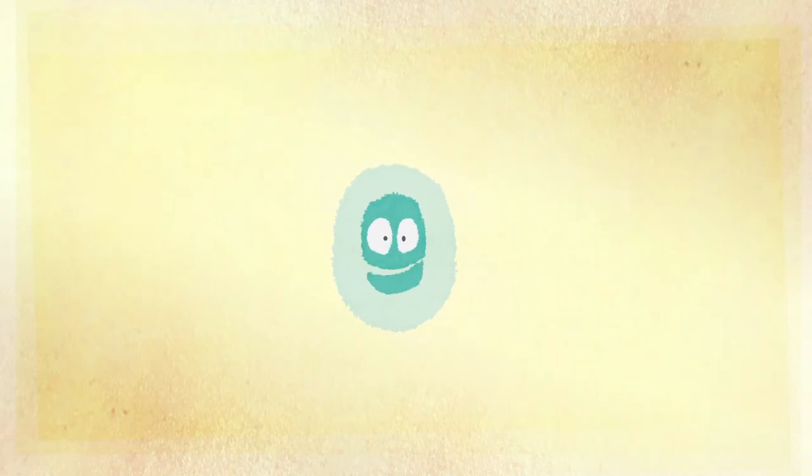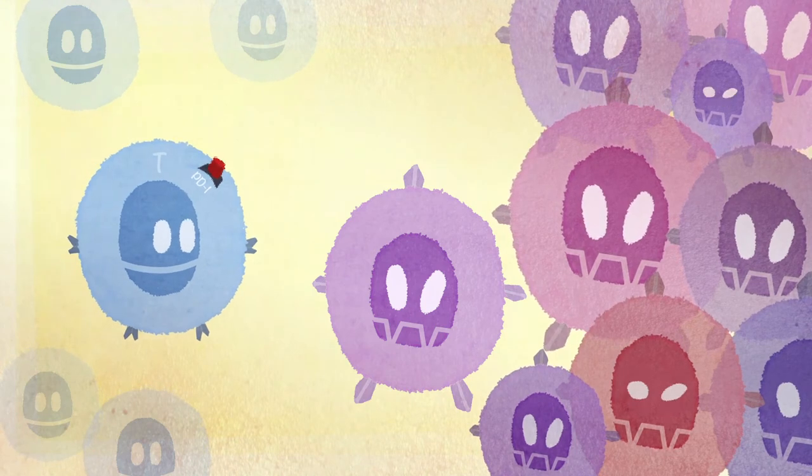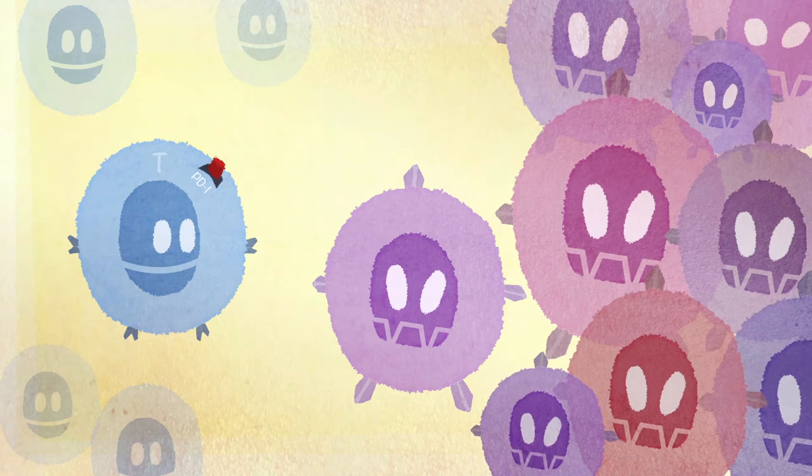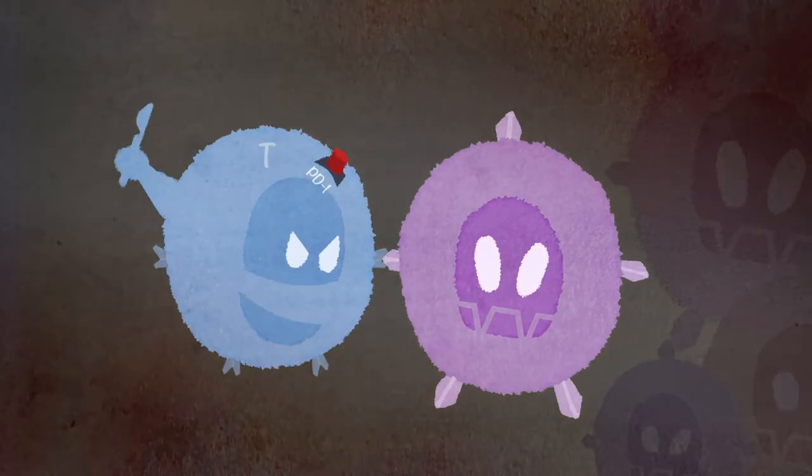These are called monoclonal antibodies. Mono, meaning one action, and clone, because they are multiplied identically. Cancer cells protect themselves from killer T cells by slowing down or blocking their attacks. These are called immunosuppressive mechanisms. They suppress the immune system and limit its capacity for defense.